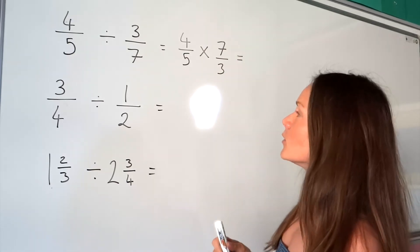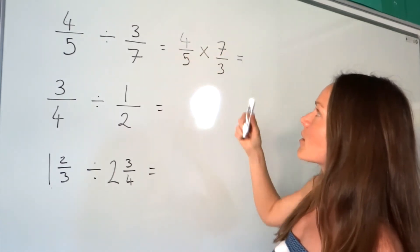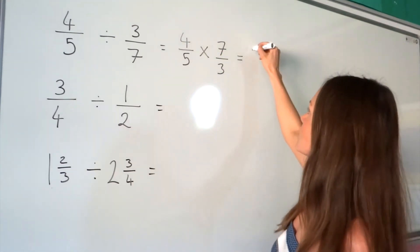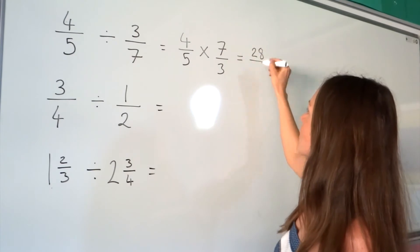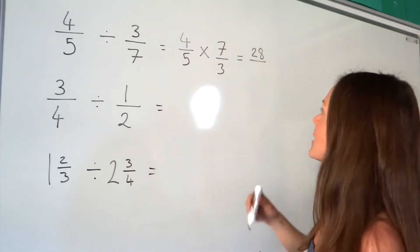So now we're just multiplying the two fractions together. Multiply the numerators together, 4 multiplied by 7 is 28, and then multiply the denominators together. So 5 multiplied by 3 is 15.